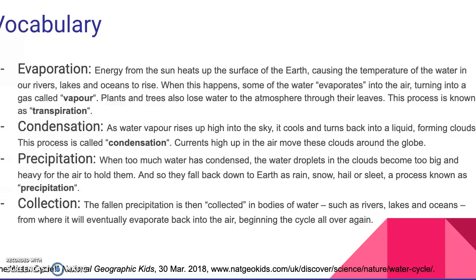Collection is our final word. The fallen precipitation is then collected in bodies of water, such as rivers, lakes, and oceans, from where it will eventually evaporate back into the air, beginning the cycle all over again.